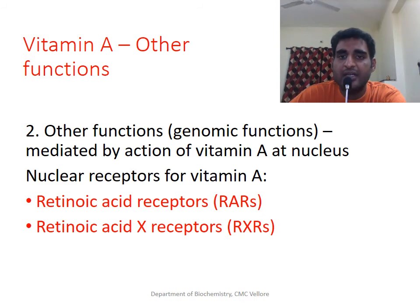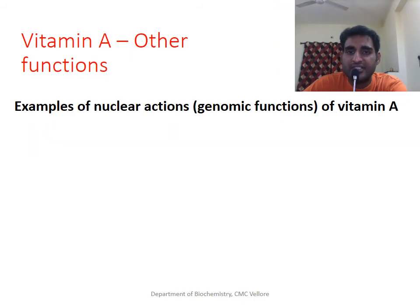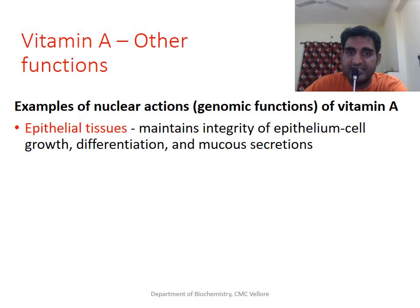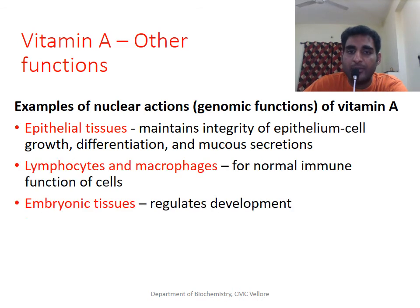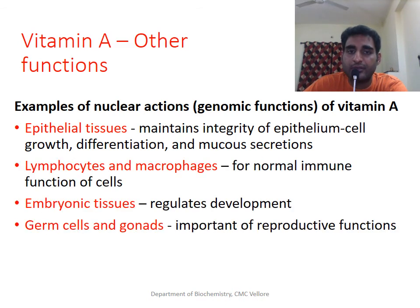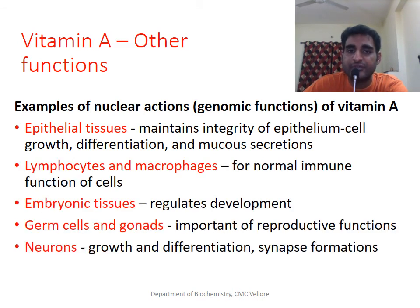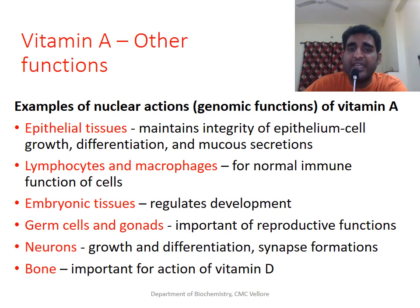Some of the cells which contain receptors for Vitamin A are epithelial cells, immune cells, embryonic cells, gonadal cells, neurons, and bone cells. In each of these, Vitamin A plays important roles to regulate their growth and development.